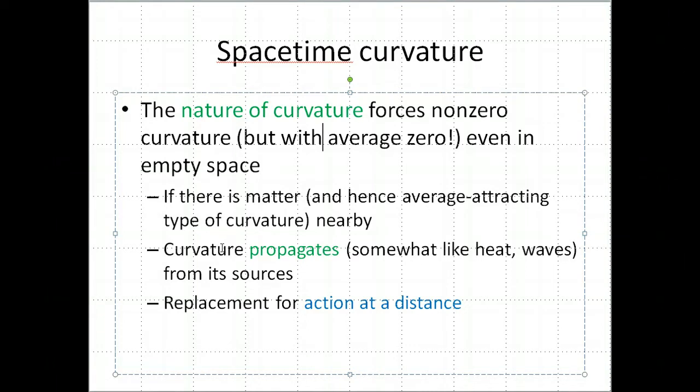So one way to think about it is, sort of like heat and waves, curvature propagates from its sources. You've got a certain kind of curvature inside the Earth, and that necessarily means that there's going to be a different kind of curvature, but still curvature, away from the Earth. And this is the replacement for action at a distance.